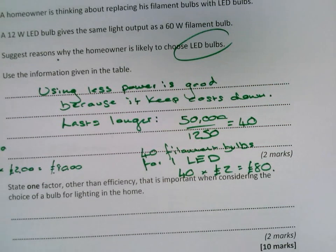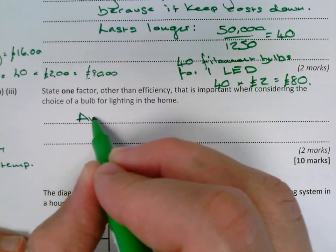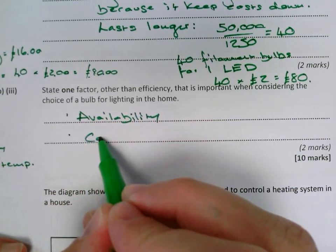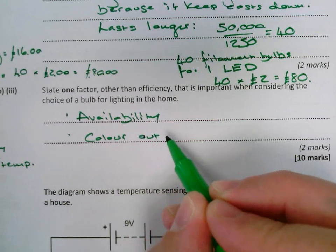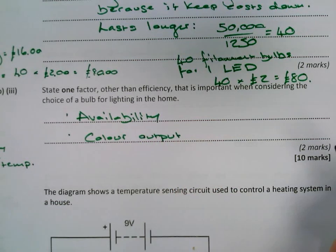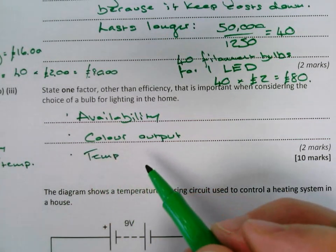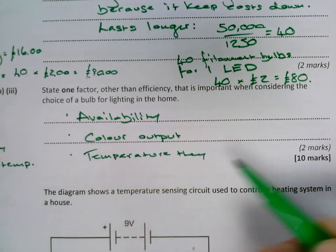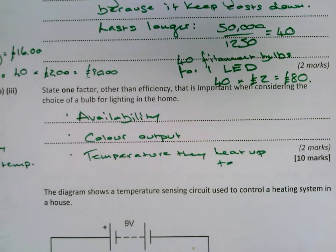I also note another factor down here. The availability is a big factor - how easy is it to get the bulbs? You can also think about the colour output. Some people don't like the colour of LEDs. The colour output and the temperature they heat up to as well. So any two of those.